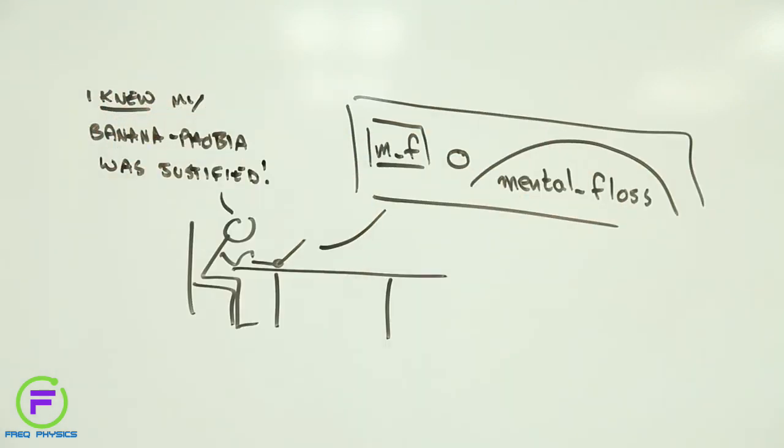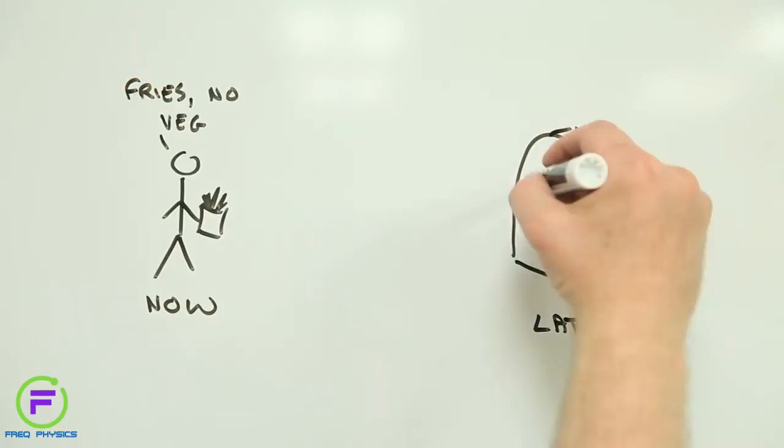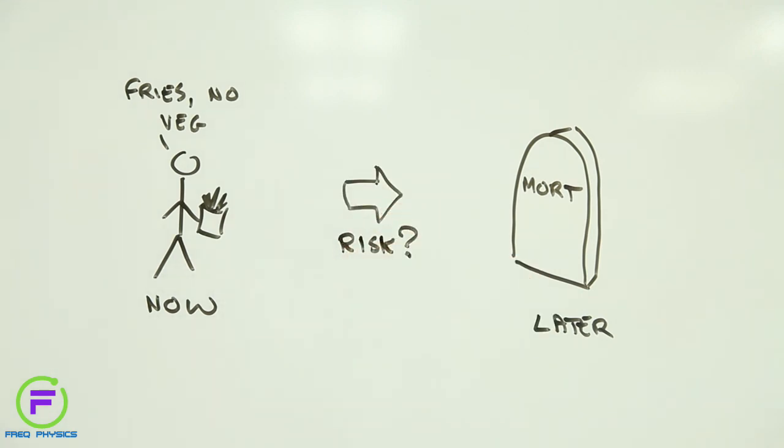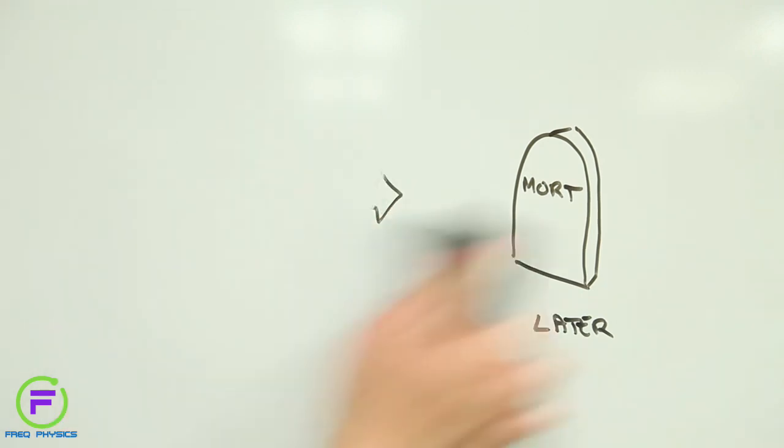But Micromorts aren't much good for risks that you don't notice until years later, like the risk of dying from cancer, for instance, because of something you did some time ago, or the chances of an early demise because you didn't eat your veggies. This is where Microlives come in.